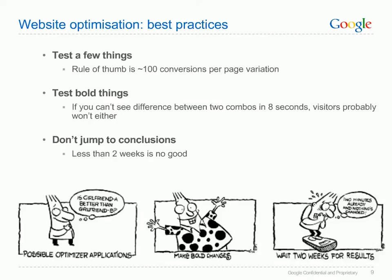Here are some best practices when it comes to website optimization. Don't try to test too many variations — the more page variations you test, the more time the test will take to conclude. Try to test changes that are bold or noticeable, as the more different a variation is, the more likely a user is going to interact with it differently. Finally, try to leave the test run for at least two weeks before stopping the experiment and drawing conclusions.